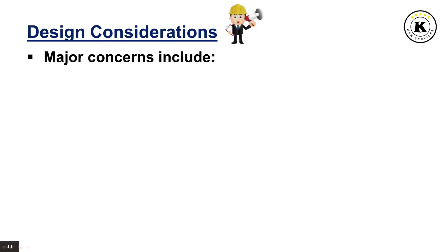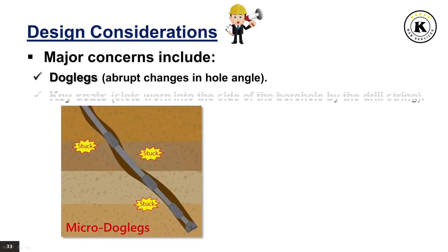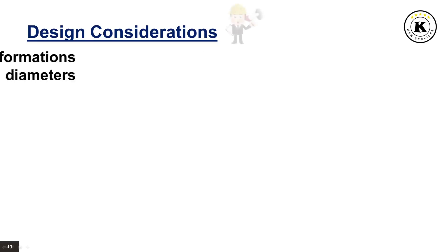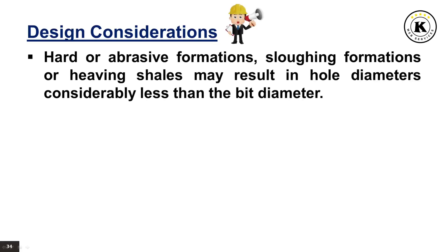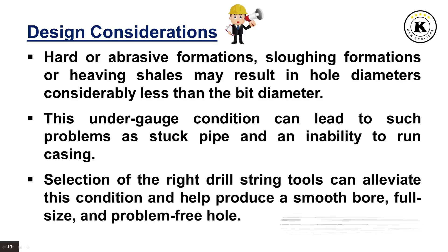Major concerns include dog legs, which are abrupt changes in hole angle, and key seats, which are slots worn into the side of the borehole by the drill string. Hard or abrasive formations, sloughing formations, or heaving shales may result in hole diameters considerably less than the bit diameter. This undergauge condition can lead to stuck pipe and an inability to run casing. Selection of the right drill string tools can alleviate this condition and help produce a smooth, full-size, problem-free hole.